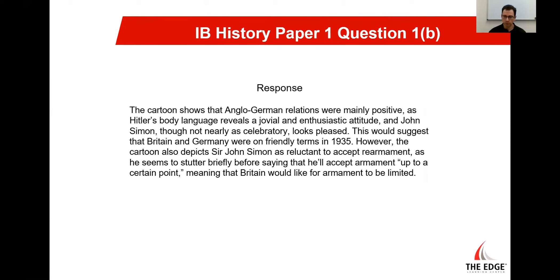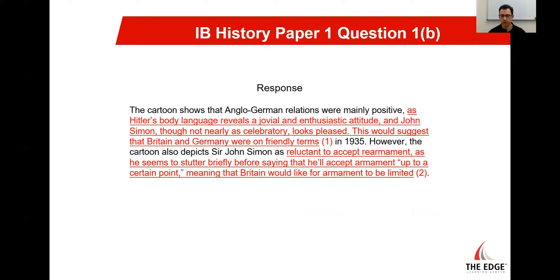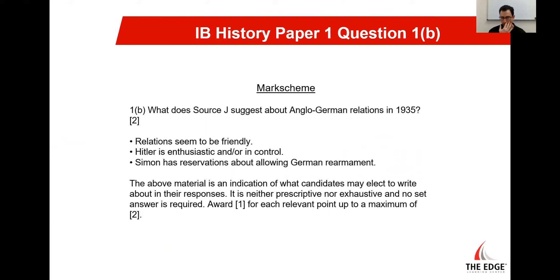So here, the question is: what does source J suggest about Anglo-German relations in 1935? The key point here is the part about Anglo-German relations. Now we have this cartoon in front of us — we could be focusing on a number of things — so it's important that we identify that key point in the question, so we know that we're not going to focus on any other aspects of this.